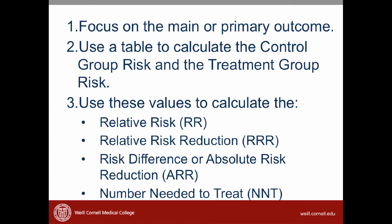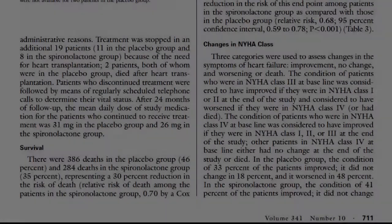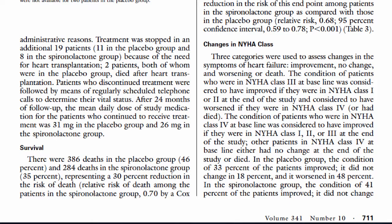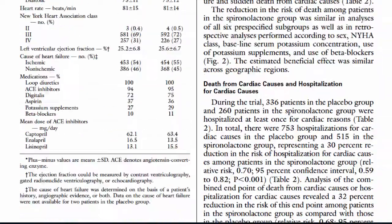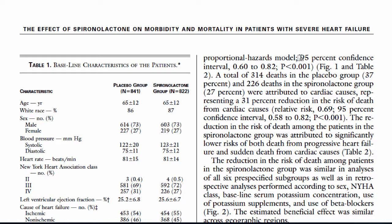To quickly go over statistical testing, let's look at the article. The researchers report that the relative risk of death among patients in the spironolactone group was 0.70. They also show the 95% confidence interval and the p-value. The 95% confidence interval is 0.60 to 0.82, which is entirely less than one, and that's why we get a p-value less than 0.05. So we would say that in this study, there was a statistically significant difference in mortality between the two groups.